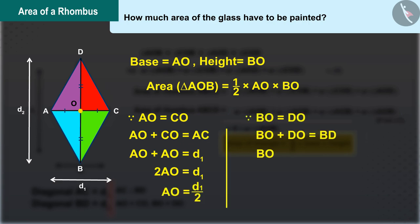Similarly, the length of BO will be half the length of BD, which is d2 over 2.